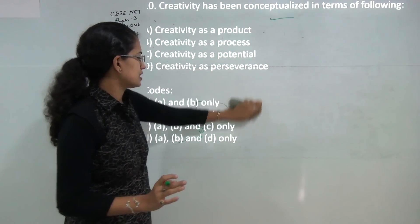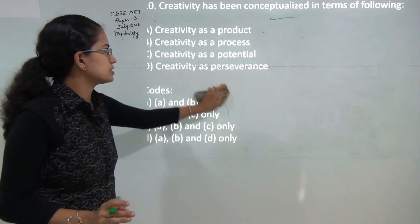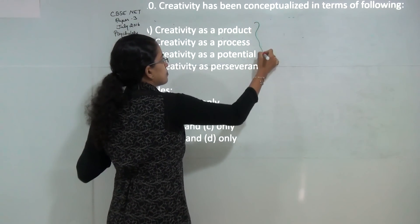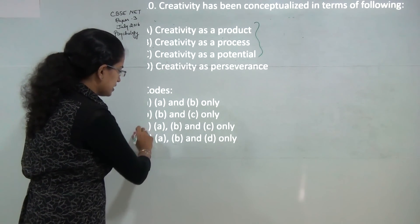Creativity is considered as a sum of three P's: product, process, and people. People have potential. So A, B, and C would be the correct answer here.